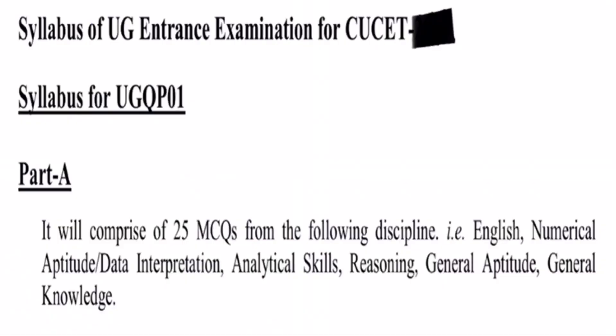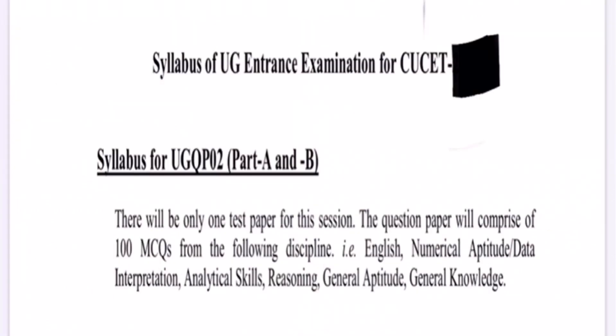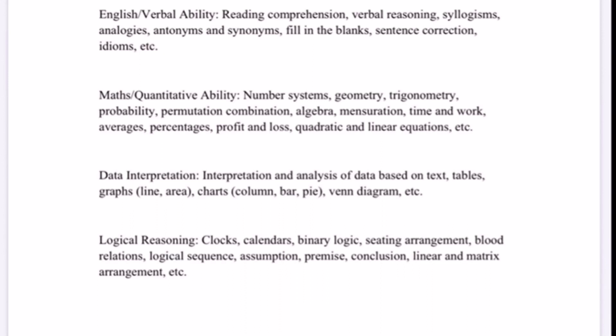Central University Common Entrance Test. We all know that the Central University Common Entrance Test has two paths — Path A and Path B. Path A comprises some general questions: Numerability Questions, Reasoning Questions, General Knowledge, and English Comprehension. A minimum of 25 questions will come under Path A for some courses, other courses have 50% from Path A, and some courses have 100% of questions from Path A.